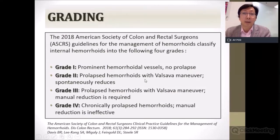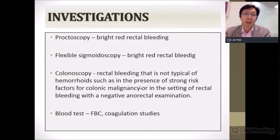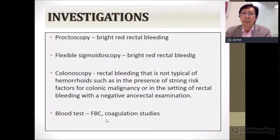In terms of investigations, clinical examination and proctoscopy after digital rectal examination are performed. Flexible sigmoidoscopy is done if patients have bright red rectal bleeding, or colonoscopy if the bleeding is not typical of hemorrhoids or there are strong risk factors for colonic malignancy. Blood tests including FBC to check for anemia and coagulation studies to ensure the patient is not prone to bleeding are also done.